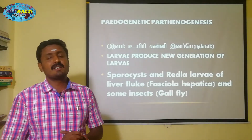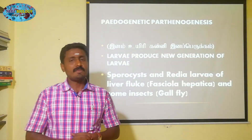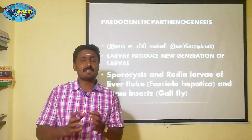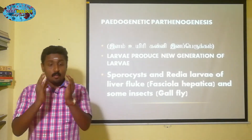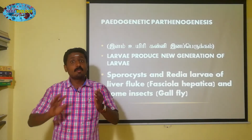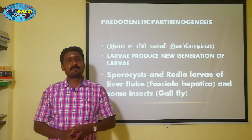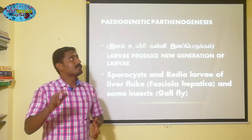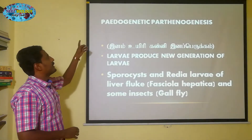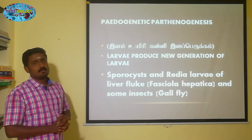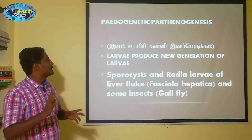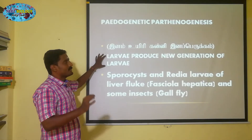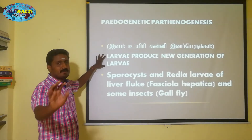In the larva stage, there will be another larva. So it's called Pedogenetic Parthenogenesis — larva produce a new generation of larva. Simple.